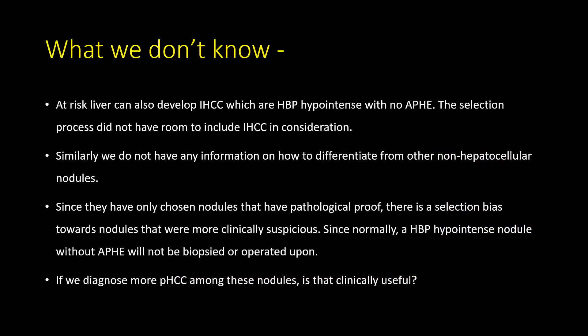There are important limitations to acknowledge. A cirrhotic liver can also develop intrahepatic cholangiocarcinoma, which is hepatobiliary phase hypointense and may not have arterial phase hyperenhancement, but the selection process did not include intrahepatic cholangiocarcinoma. Similarly, there is no information on how to differentiate from other non-hepatocellular nodules. Since the authors only chose nodules with pathological proof, there is a selection bias toward nodules that were more clinically suspicious, as a HBP hypointense nodule without arterial phase hyperenhancement would not normally be biopsied or resected.